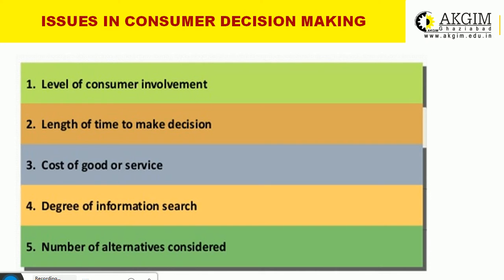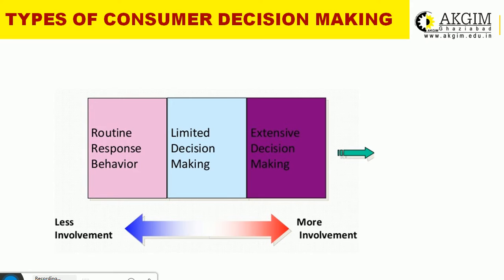The number of alternatives considered is also an important issue. We'll discuss what evaluative criteria consumers consider, how they are prioritized, and what sets consumers consider — the awareness set, and others — in further slides. The types of consumer decision making can also be named as levels of decision making. The time and effort required to complete the whole process varies across different buying situations.